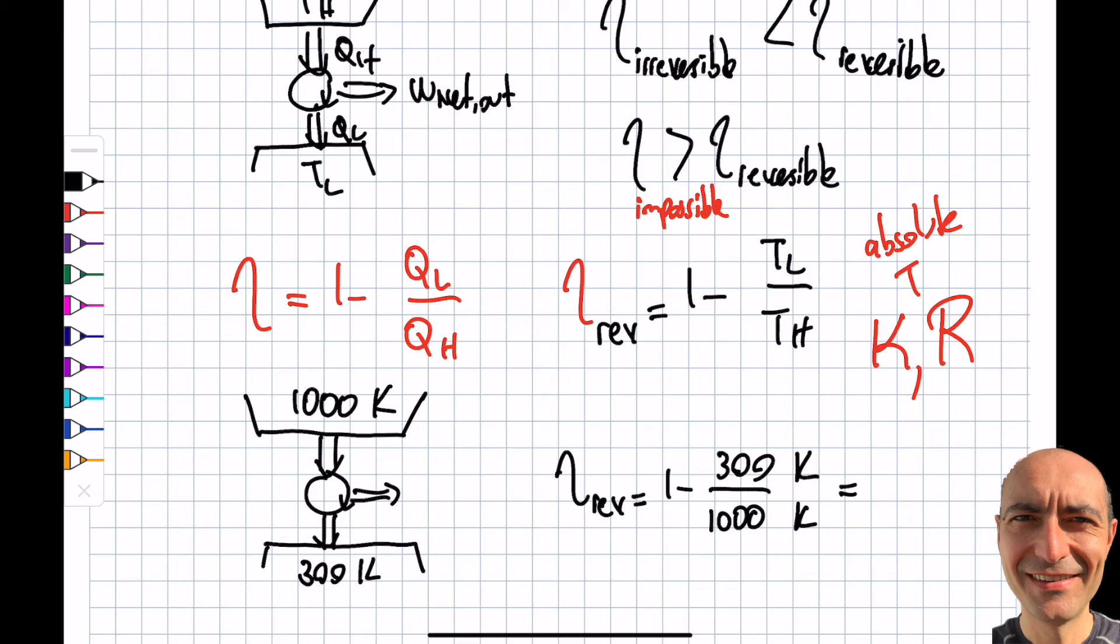I get 0.3, 300 divided by 1000 is 0.3, so I get 70% maximum efficiency that I can obtain from a heat engine.